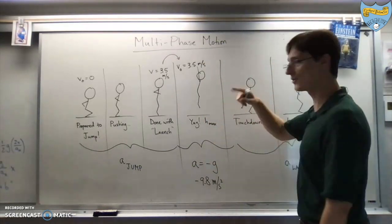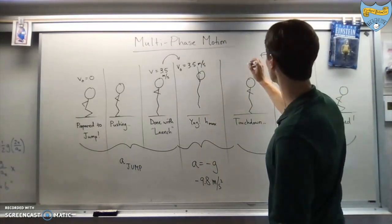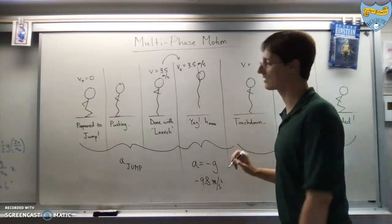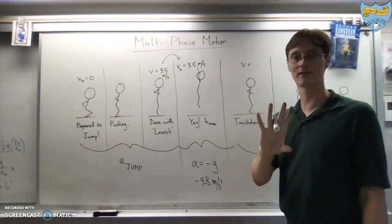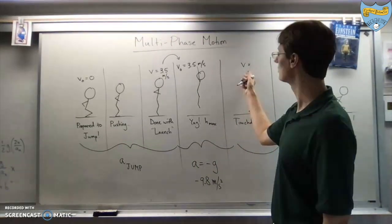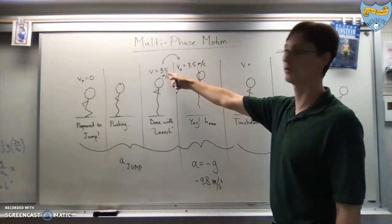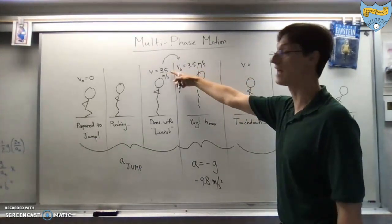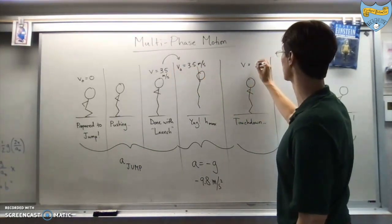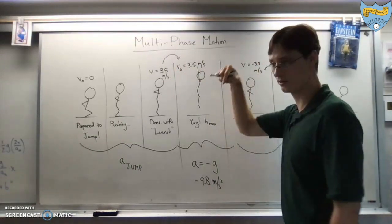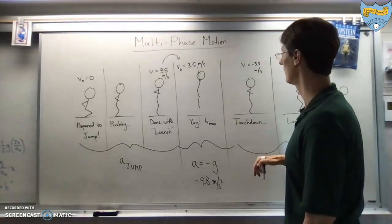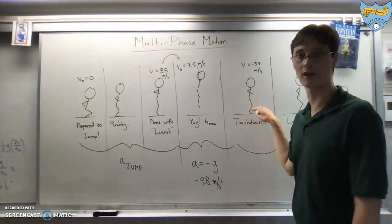At the moment that you hit the ground, your final velocity will be some number. Assuming everything works the way that it should in physics, you would, in fact, land going at negative 3.5 meters per second because you're going downwards. And you landed at the same height that you launched from.